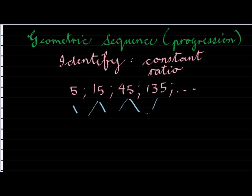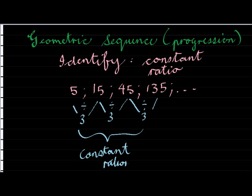But what you do notice is that 15 divided by 5 gives me 3, 45 divided by 15 gives me 3 again, and 135 divided by 45 gives me 3 again. And this time we find a constant ratio.